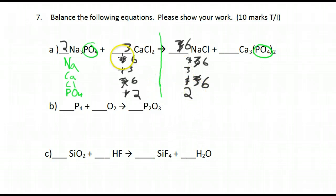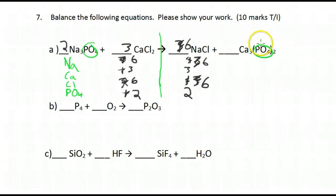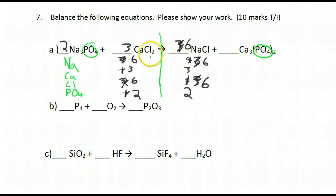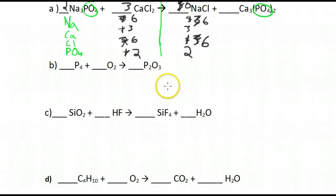Let's double check: six sodiums on this side, six sodiums on the other; two phosphates on this side and two on the other; three calciums on each side; and six chlorines on each side. We are good to go!